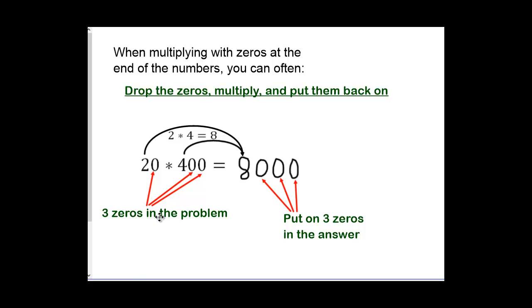First we're going to look at multiplication. When you're multiplying with zeros at the end of the numbers, you can use the following strategy. Drop the zeros, multiply the numbers, and put them back on.